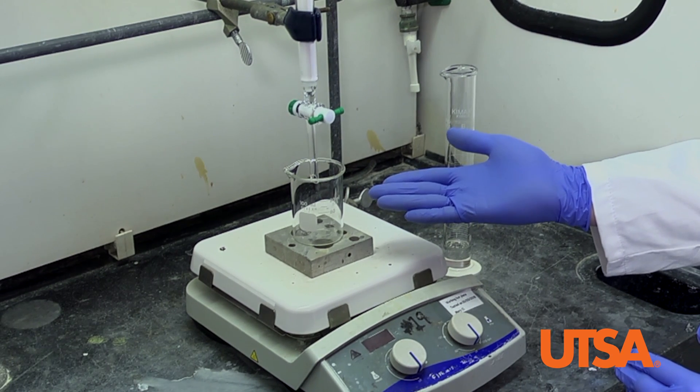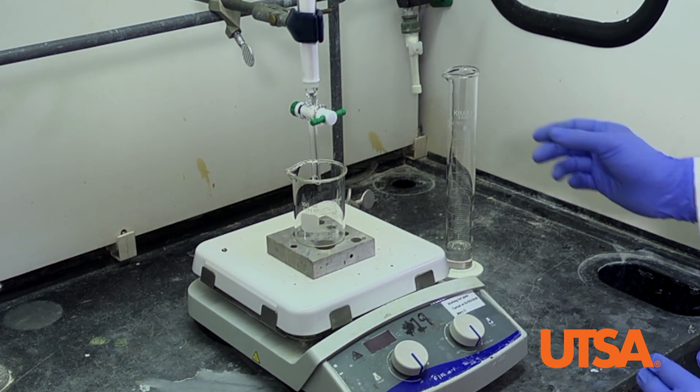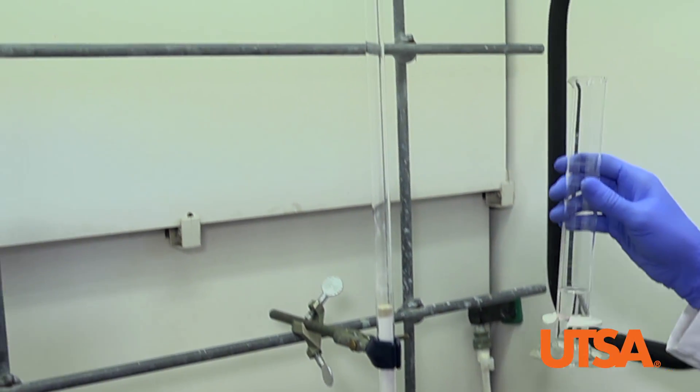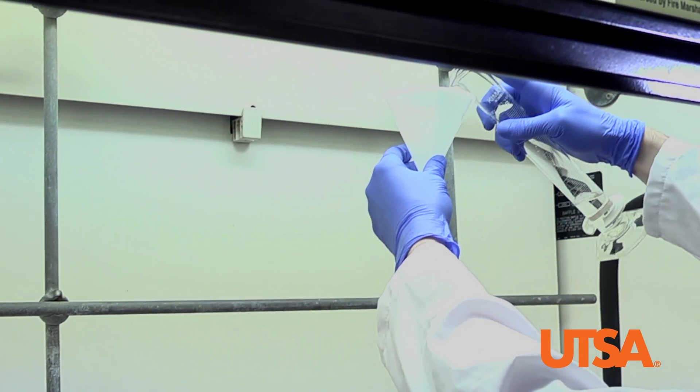Make sure you have an Erlenmeyer flask beneath the column and then slowly pour 25 milliliters of petroleum ether. Petroleum ether is used to wash the walls of the column.